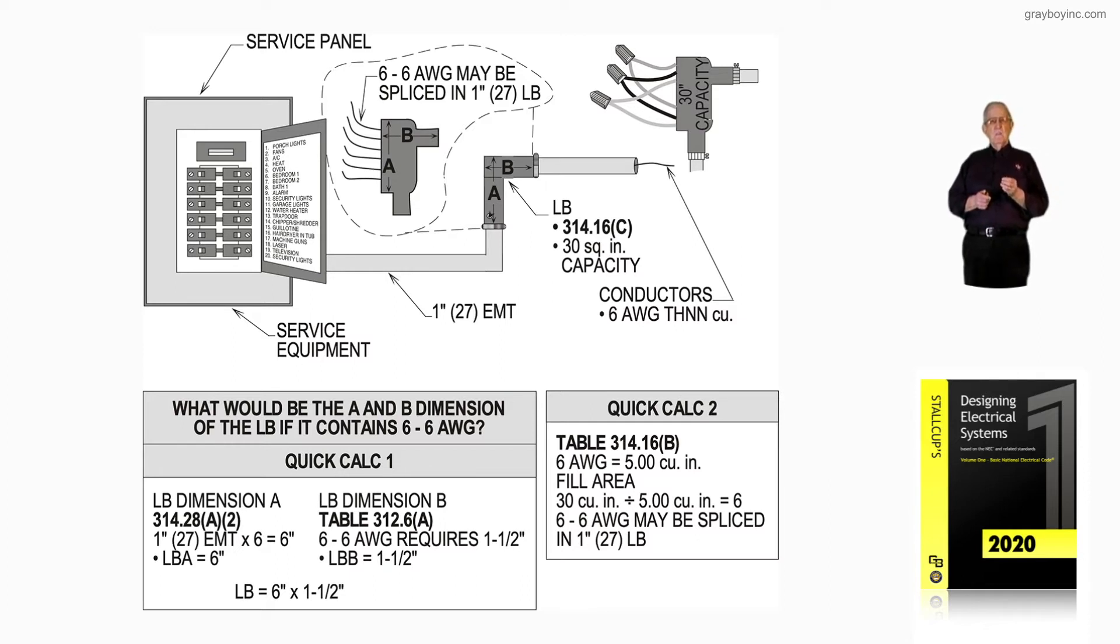The LB dimension B, as you see in the illustration above, would be for six number six AWG conductors would require a one and a half inch LB that we would use there.